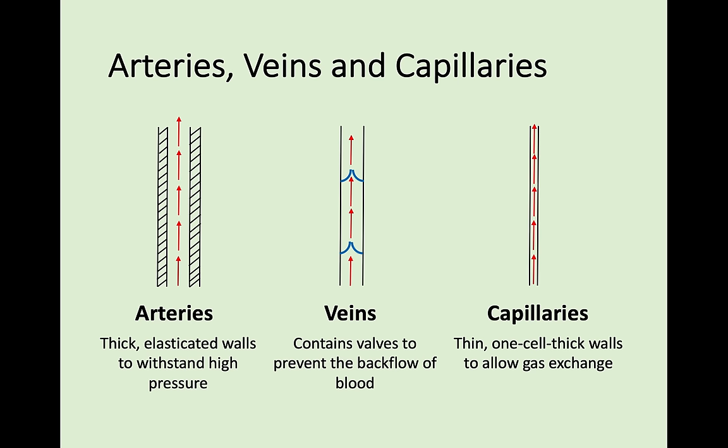Capillaries - there are a lot more of these but they are very small and very thin. They're one cell thick, and that enables gas exchange. Capillaries form a network all around our body, and these tiny little capillaries are all over the place, delivering oxygen to all the different muscles and tissues around our body.